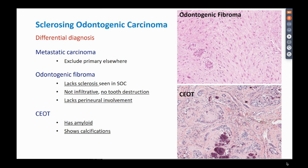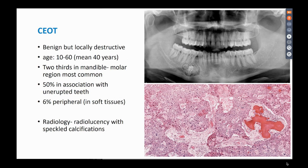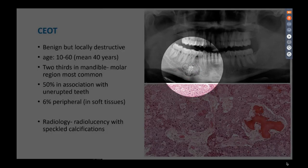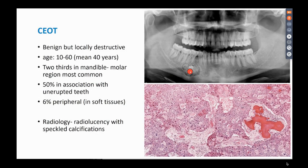Moving on to CEOT — calcifying epithelial odontogenic tumor — these are benign but locally destructive tumors. The mean age of involvement is 40 years, the majority are in the mandible, particularly the molar region, and half present in association with impacted teeth — here you can see a tooth-like structure within the tumor. Six percent of cases present just in the soft tissue with no bony component. On radiology the lesion is not entirely dark — there are whiter areas indicative of the calcifications present within the tumor.